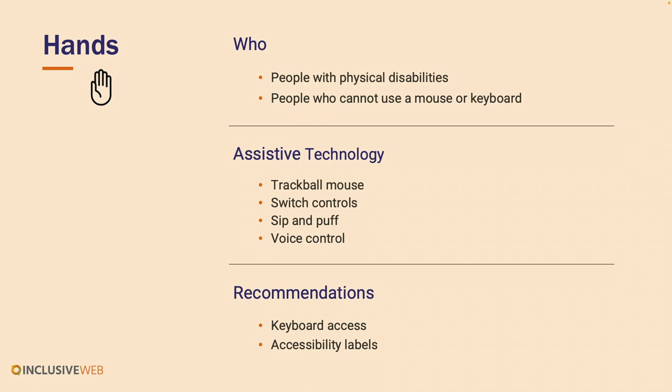People with mobility or physical disabilities — these are users who most commonly cannot use a mouse and often use a keyboard. In some cases a user with a physical disability might use a sip-and-puff device, depending on the type of disability. When we think of the assistive technologies there, it's a trackball mouse, switch control, sip-and-puff devices, or maybe even voice control. Our recommendations include making sure you're using keyboard access and accessible labels.